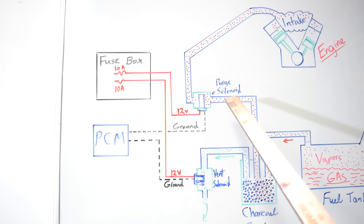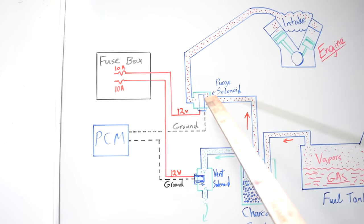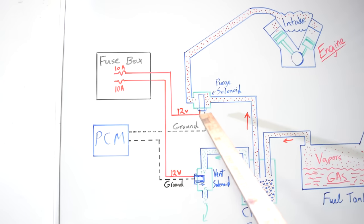Now, the way your purge solenoid is switched on and off is very similar to the way that your vent solenoid is switched on and off in that it has constant battery voltage from your fuse or junction box supplied to it. And the switching is done through a ground wire that comes from your PCM. So this solenoid is usually in the closed position, but when your PCM decides to activate it, it simply supplies it ground through this ground wire, and that activates the solenoid and opens it up.